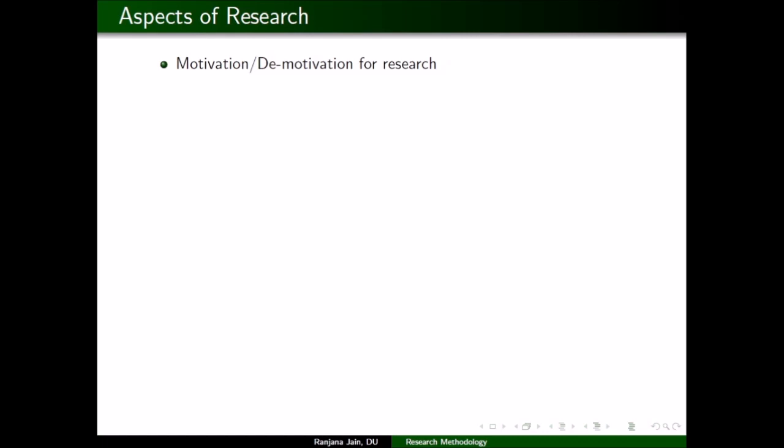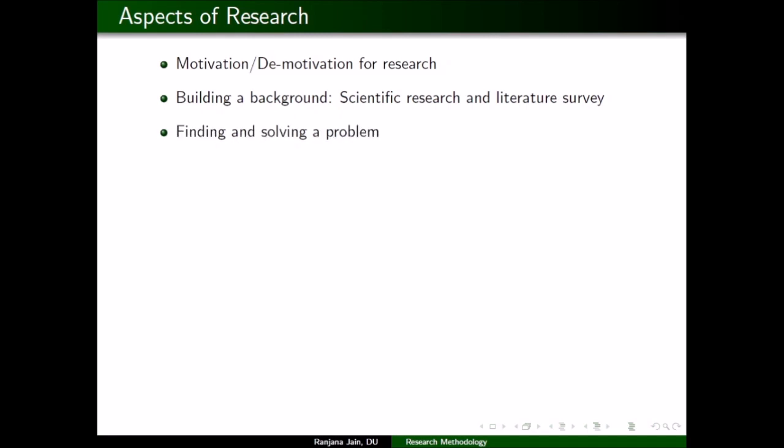The first aspect involves motivation and demotivation for research. You may be motivated enough to do research, but there will also be various factors that demotivate you. Once you are sufficiently motivated, you need to know how to start doing research. For that, you have to build a proper background, which can be built using a literature survey and scientific study.